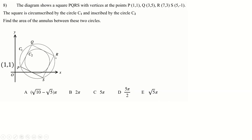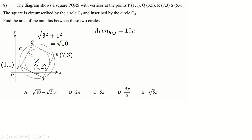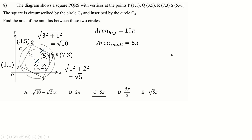Question 8: P is (1, 1) and R is (7, 3). The centre of the square — midpoint of the diagonal — is ((1+7)/2, (1+3)/2) = (4, 2). The radius of the larger circle is the distance from centre to P: √(3² + 1²) = √10, so the area is 10π. Q is at (3, 5), and the midpoint of Q and R is (5, 4), giving the smaller circle's radius as √(1² + 2²) = √5 and area 5π. The annulus area is 10π − 5π = 5π.